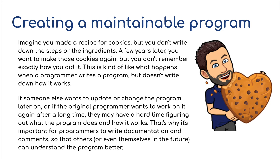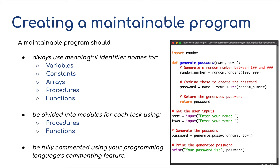That's why it's important for programmers to write documentation and comments so that others — or even themselves in the future — can understand the program better. A maintainable program should always use meaningful identifier names for variables, constants, arrays, lists, procedures, and functions. It should also be divided into modules for each task, using either procedures, functions, or a combination of both. And it should be fully commented using your programming language's commenting feature — for example, in Python we'd use the hashtag.